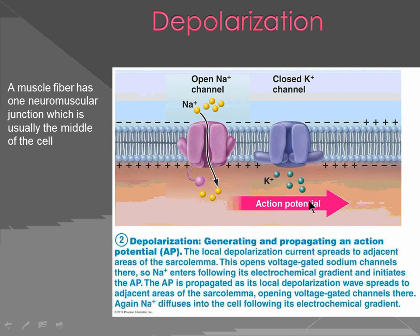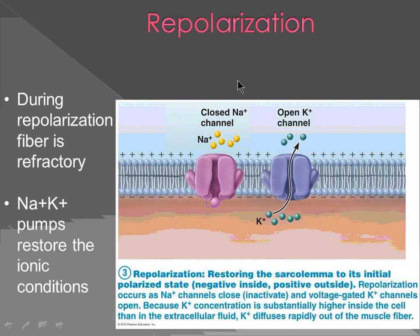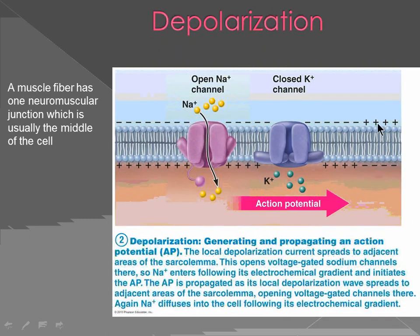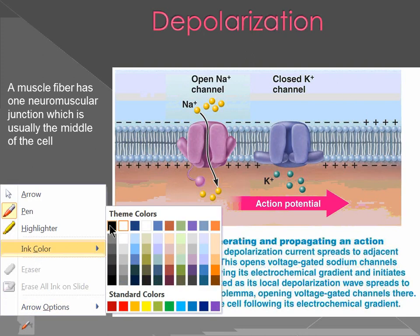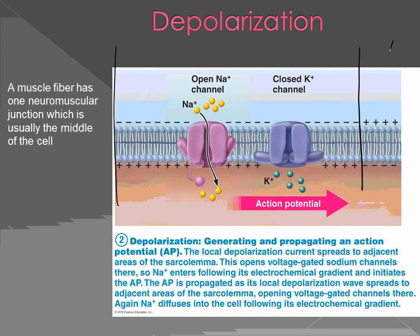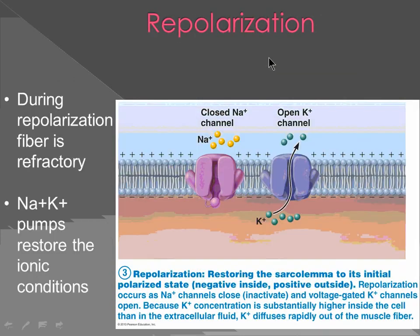The action potential goes in either direction. One patch of membrane gets depolarized, and as it does so, it sends the action potential to the adjacent areas. As the action potential moves on, the previously depolarized patch has to come back to normal — known as repolarization — to restore the sarcolemma to its initial polarized state where it's negative inside and positive outside.